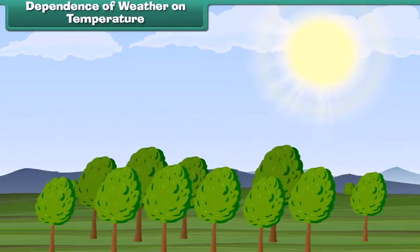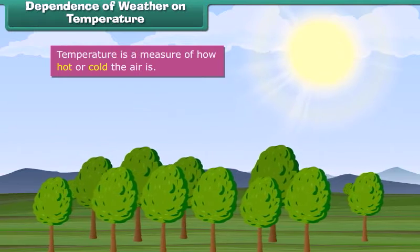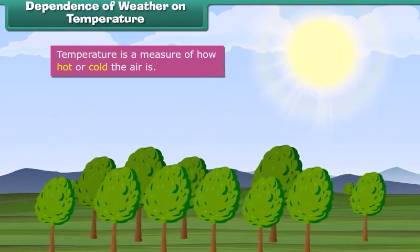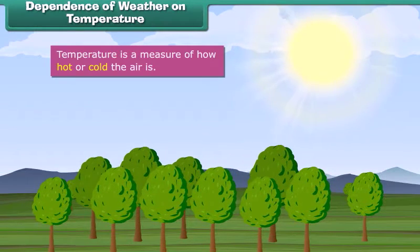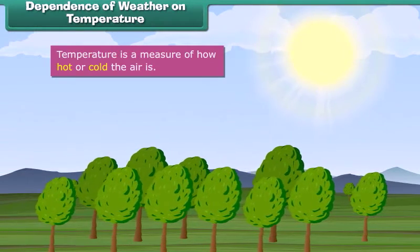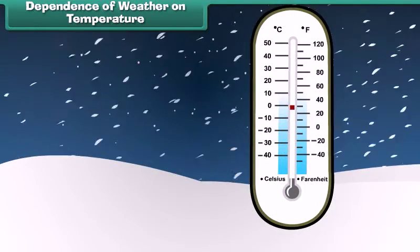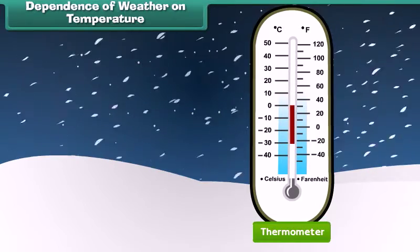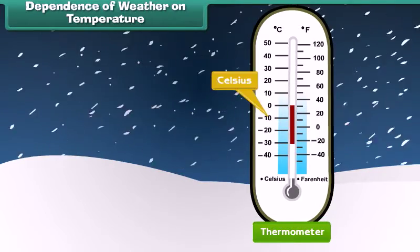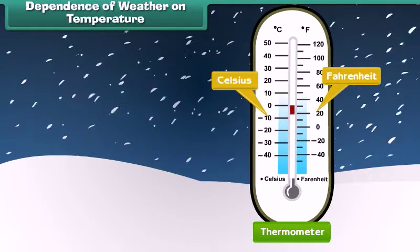Temperature is a measure of how hot or cold the air is. It depends upon the energy it receives from the sun. Temperature is measured with the help of a device called a thermometer and it is calculated in degrees Celsius and degrees Fahrenheit.